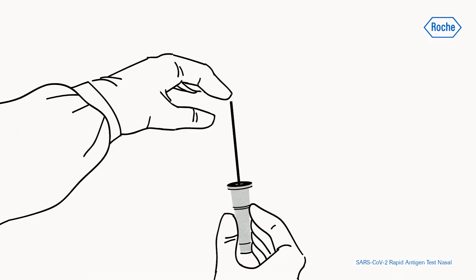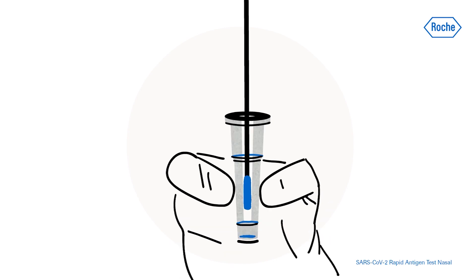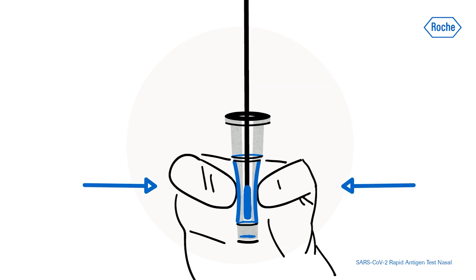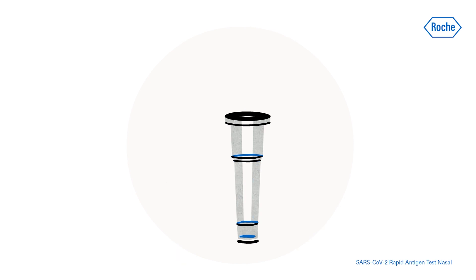Insert the swab into an extraction buffer tube. While squeezing the buffer tube, stir the swab more than 10 times. Remove the swab while squeezing the sides of the tube to extract the liquid from the swab. Press the nozzle cap tightly onto the tube.